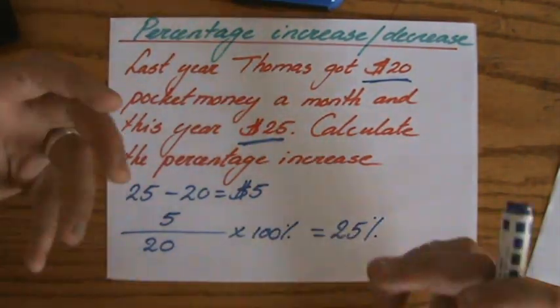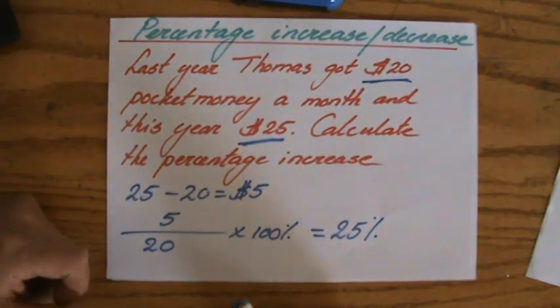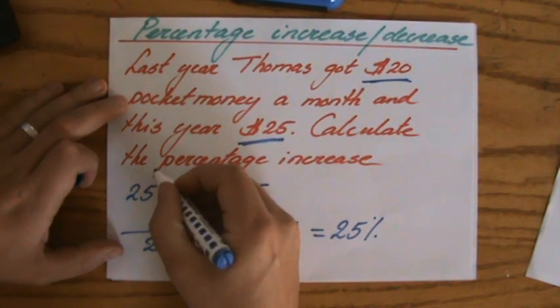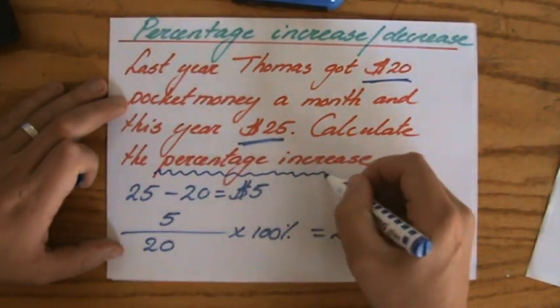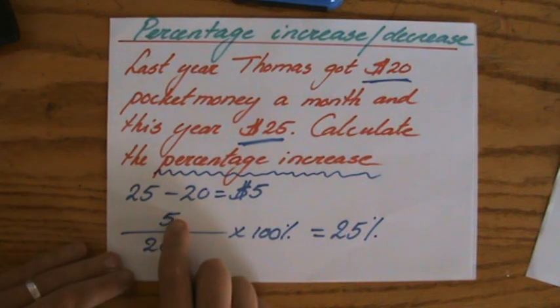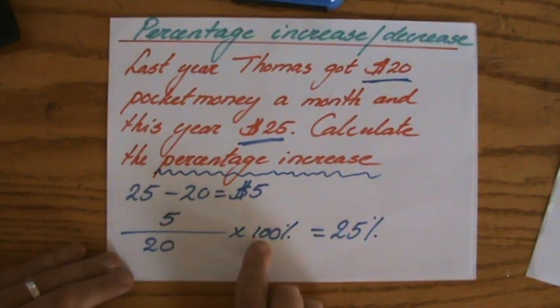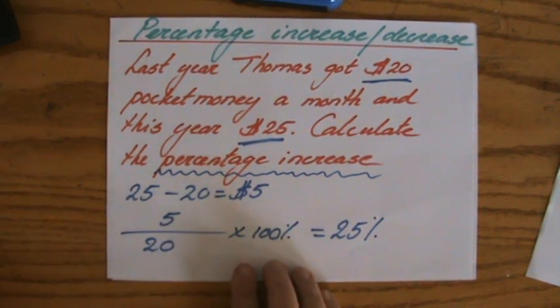These are keywords: percentage increase or percentage decrease, the change in value over the original times by a hundred percent. One more video, one more example question. I'll see you there.